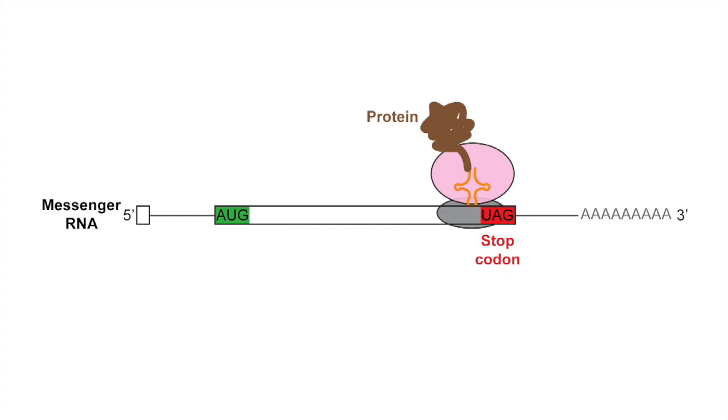The information contained within these messenger RNAs is organized in a repeating pattern referred to as codons. Based on a relationship known as the genetic code, ribosomes read these codons to produce proteins in the proper order and length through a process known as translation.